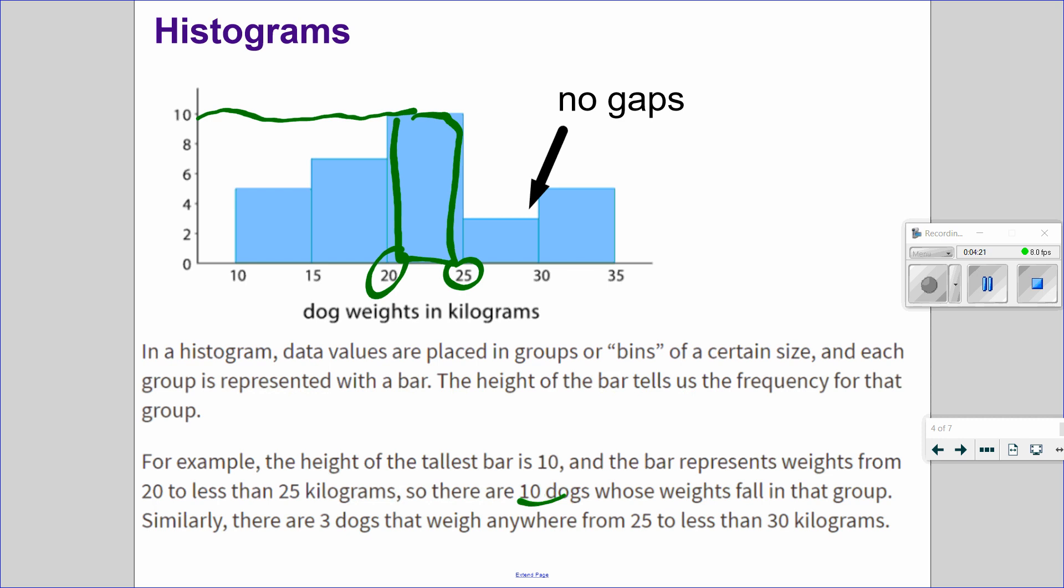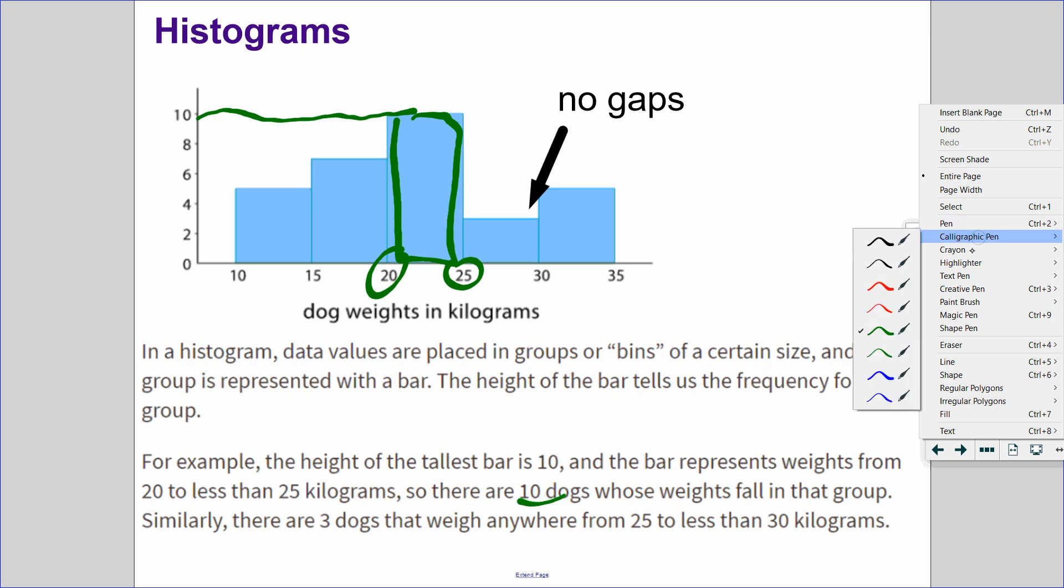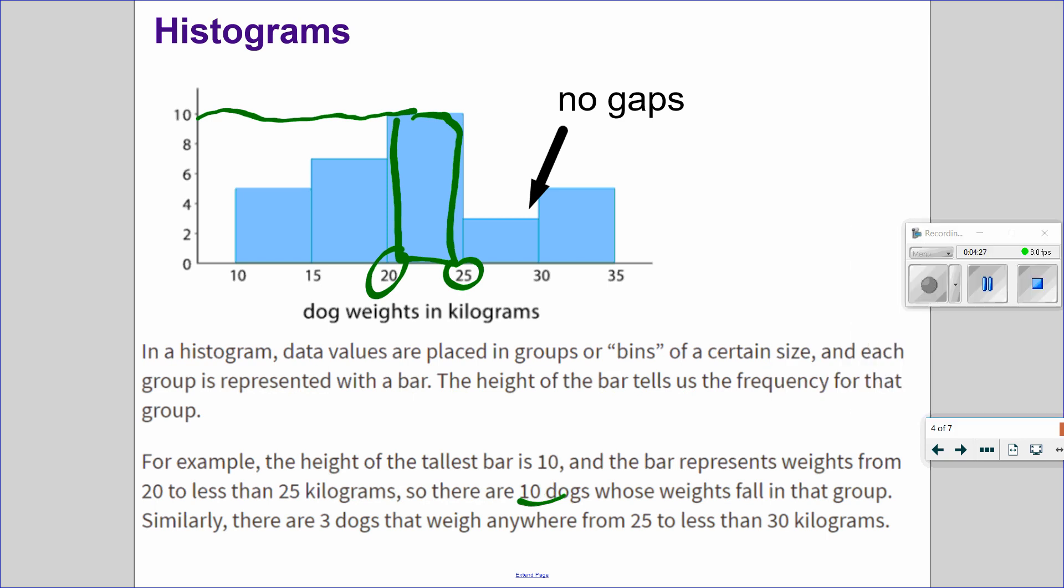Similarly, there are three dogs that weigh between 25 to less than 30. Right here. Between 25 to 30, there are three dogs.